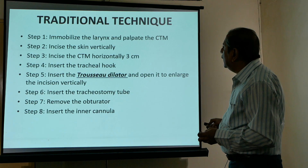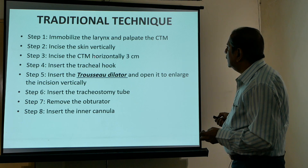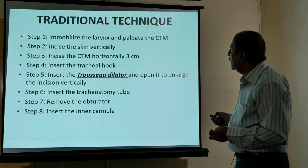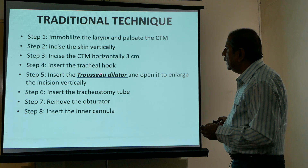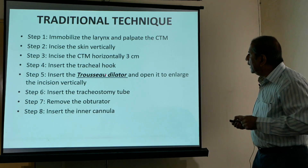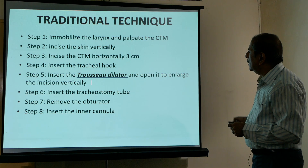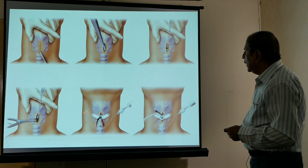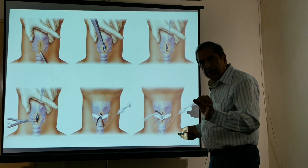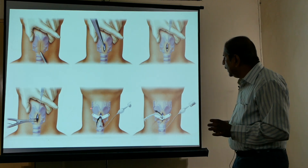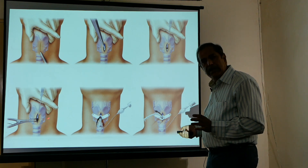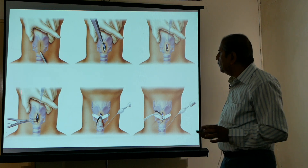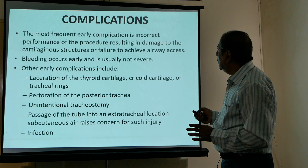In the traditional technique: immobilize, then make a vertical incision of approximately 4 cm, followed by a horizontal incision of about 3 cm. Insert the tracheal hook on the upper side, then insert the dilator and tracheal tube, and remove the obturator. The dilator is used to create a larger space to introduce the tracheal tube; a hook facilitates pulling and stabilizing the thyroid cartilage upward.